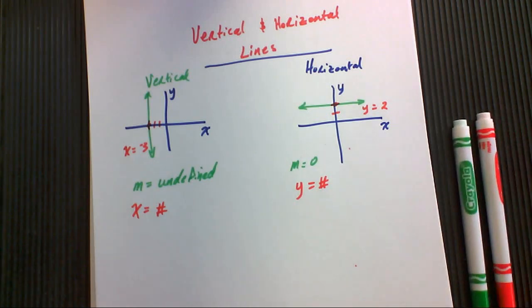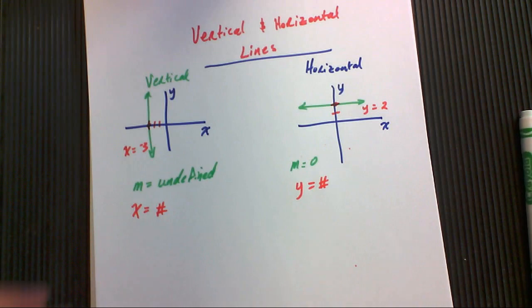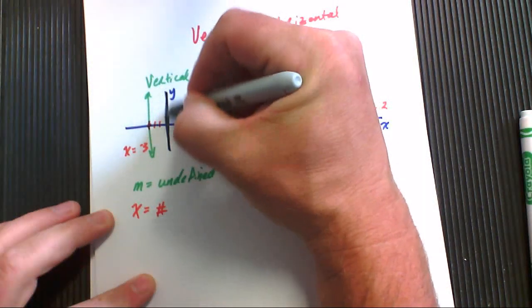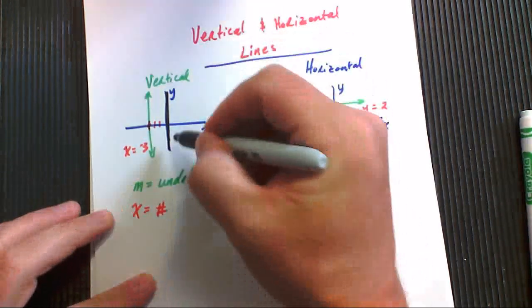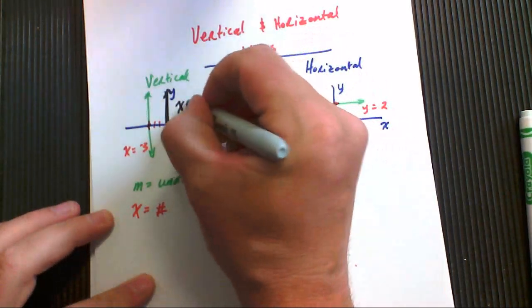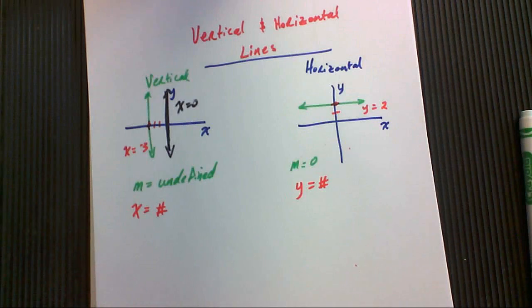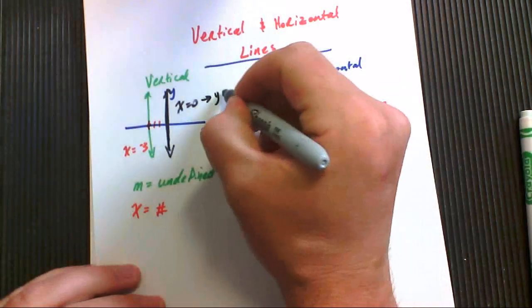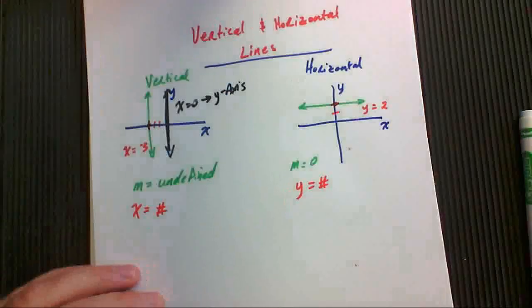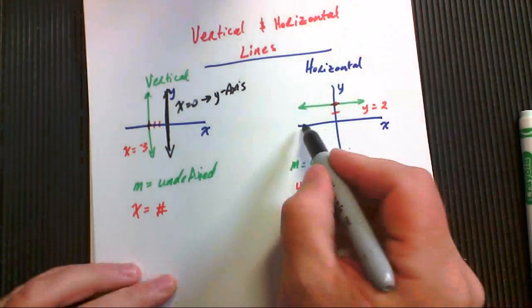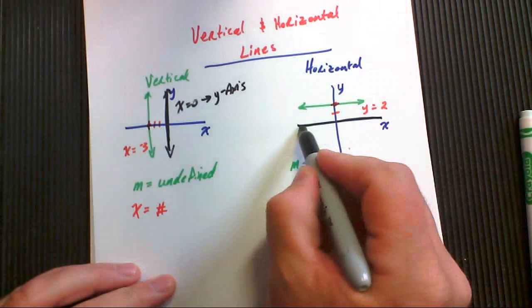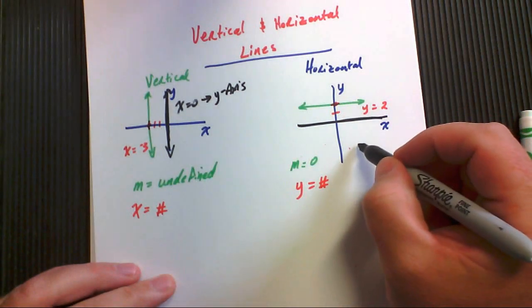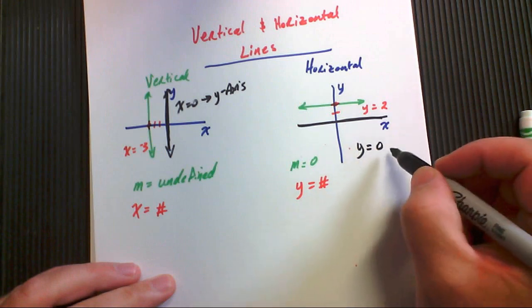A little side note, the equation of the y-axis, this line right here, that line right there, it has an equation that's x equals zero. And over here, when we have our x-axis, which is horizontal, that's what I'm discussing in here, the equation of the x-axis is y equals zero.